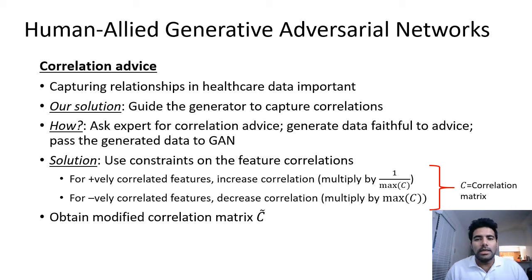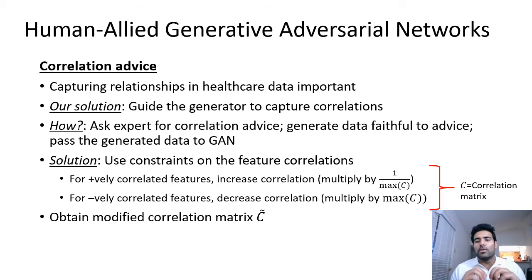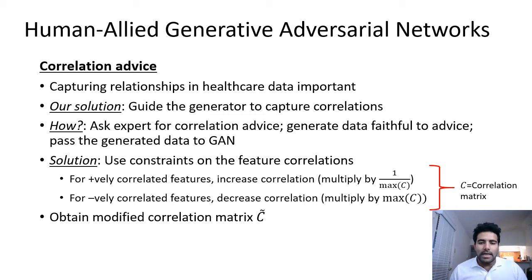There might be a question regarding the choice of advice: why do we use only correlation advice? Real-world medical data sets have hidden relationships, and capturing those relationships is of paramount importance to faithfully generate synthetic medical data. Correlations are the most natural way to capture those hidden relationships, so we guide the generator to capture such correlations. We ask the expert for correlation advice, generate data faithful to that advice, and then pass the generated data to the GAN architecture.